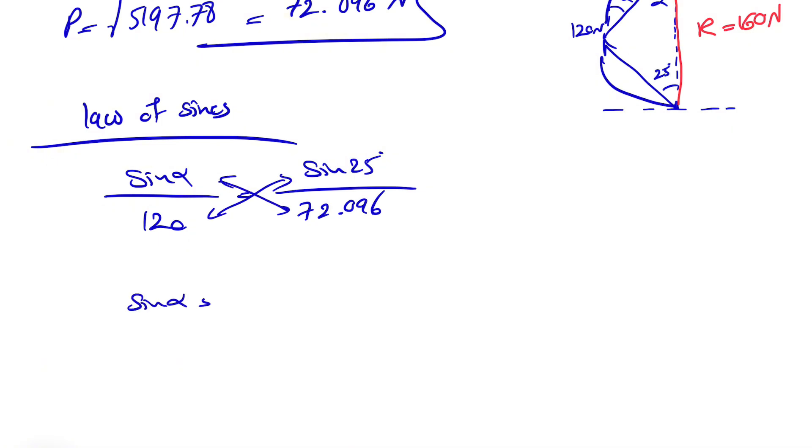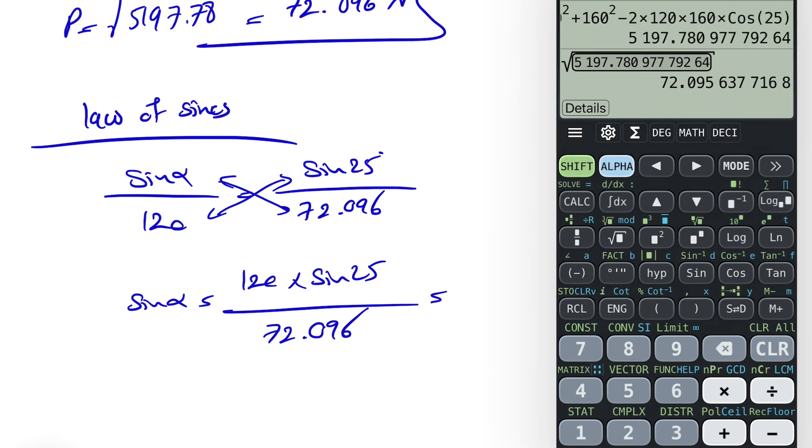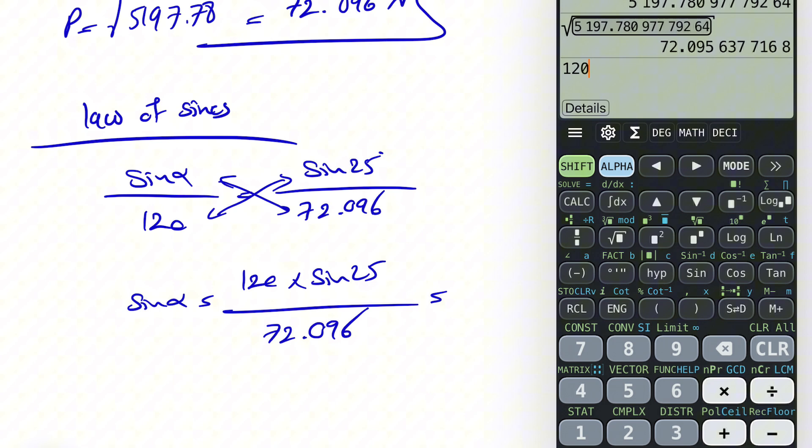If we cross multiply this, we're going to find the sine of alpha, which will be 120 times sine of 25 divided by 72.096. Let's see what we're going to find.